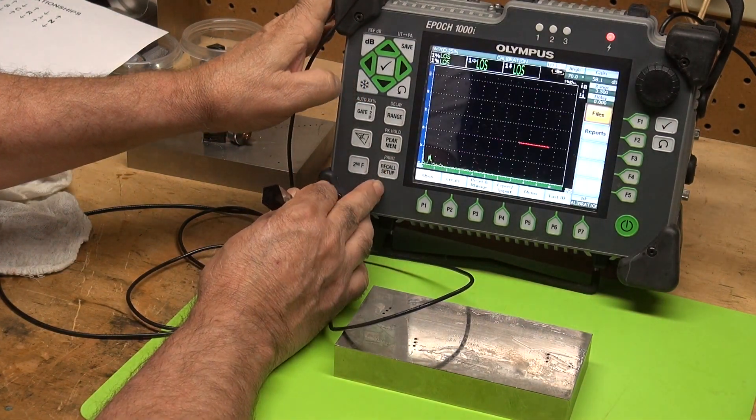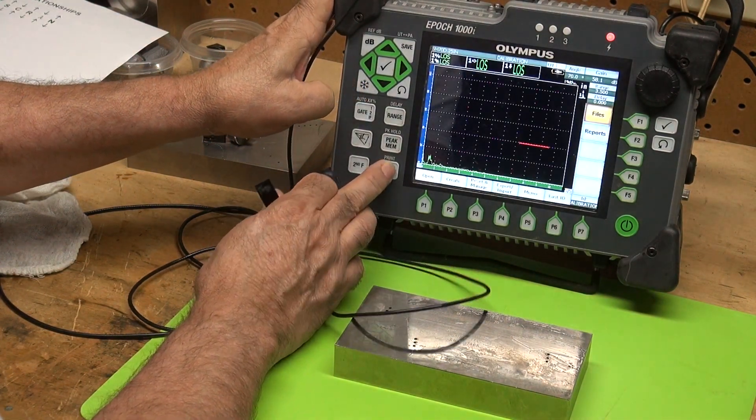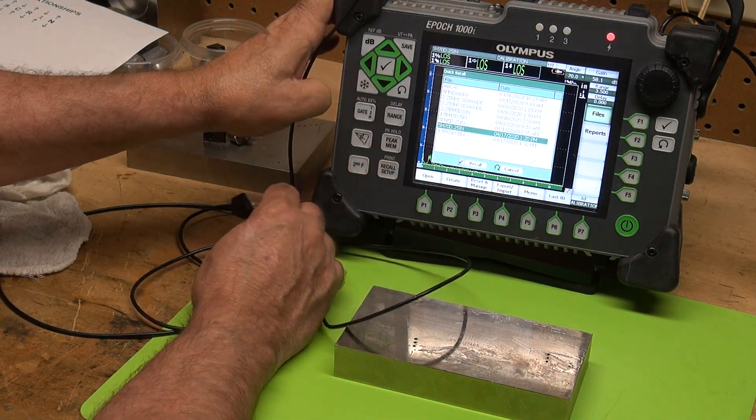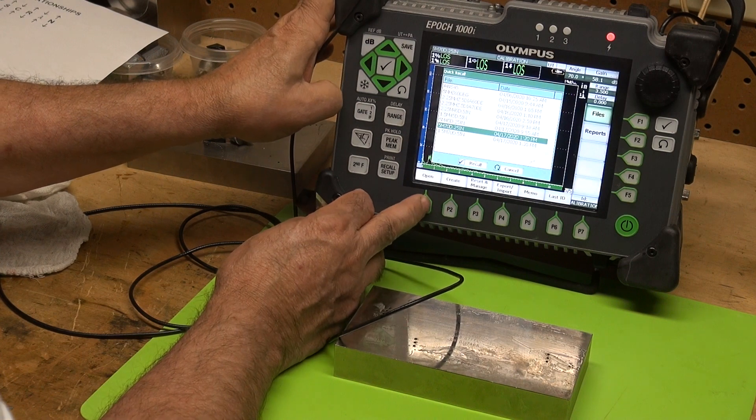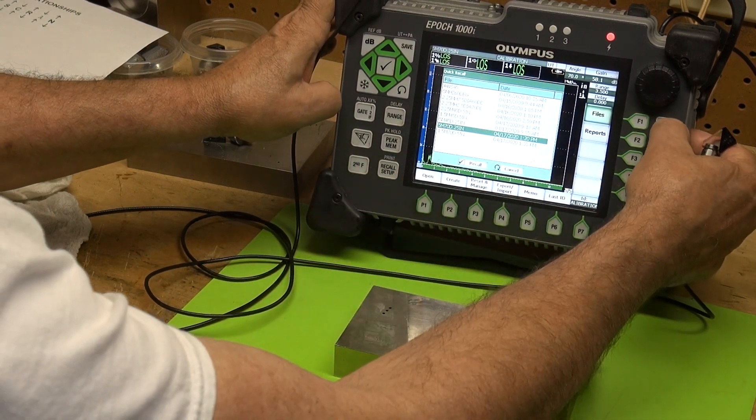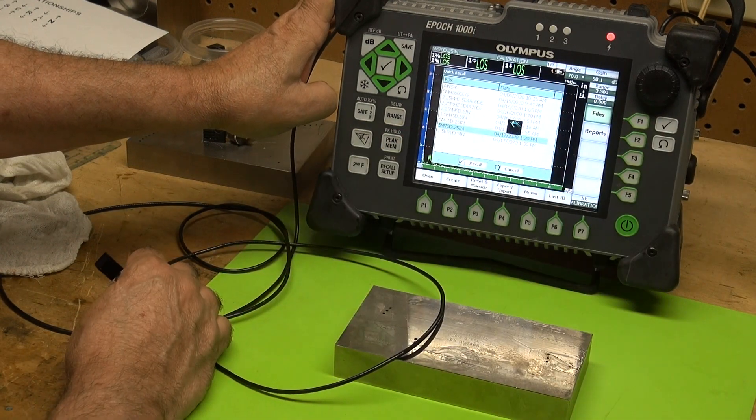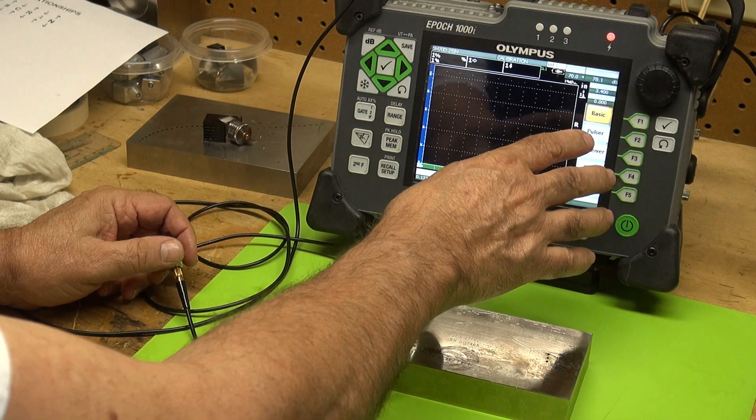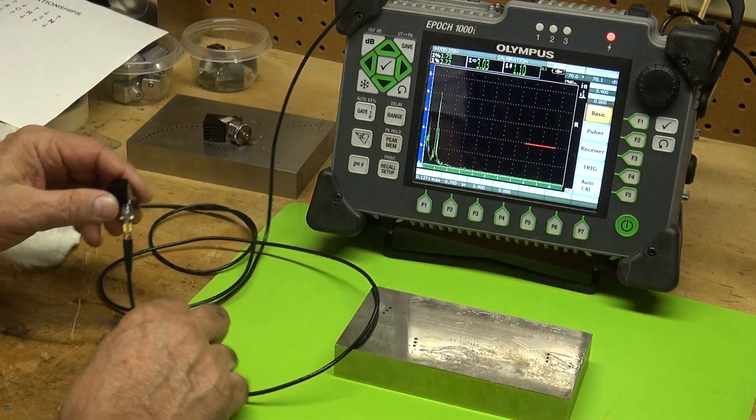Then we need to push recall setup. Bring it back down again to that five megahertz, 70 degrees, quarter inch, and we'll hit the check, which is the recall. Hit the check. And it's going to recall that setup. So I basically had the same setup, the same range, my gate in the same area.